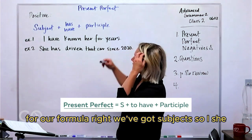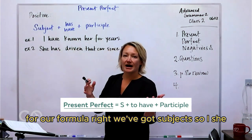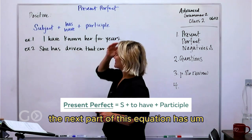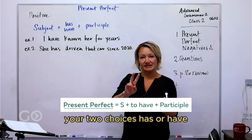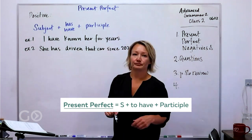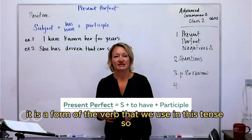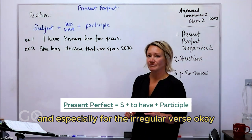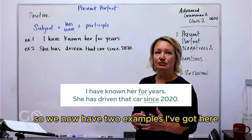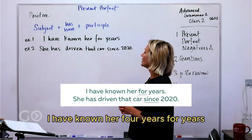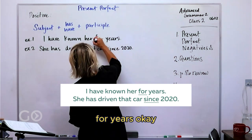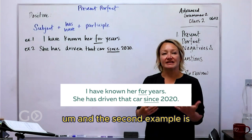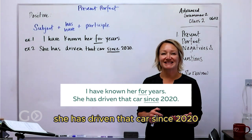So, what we have here for our formula — we've got subject. So, I, she, the dogs, the company — any subject is always our first part. The next part of this equation, you have two choices: has or have, and then the participle. What is the participle? It is a form of the verb that we use in this tense, so it is well worth your time to study the participles, especially for the irregular verbs. We now have two examples here: 'I have known her for years,' and the second example is 'She has driven that car since 2020.'